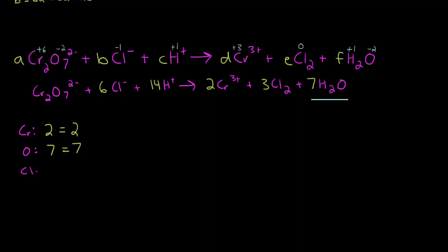For chlorine, we have 6 chlorine on the left is equal to 3 times 2, 6 chlorine on the right. For hydrogen, we have 14 on the left is equal to 7 times 2 is 14 on the right. So everything appears to be balanced and we were able to do it using the algebraic method.